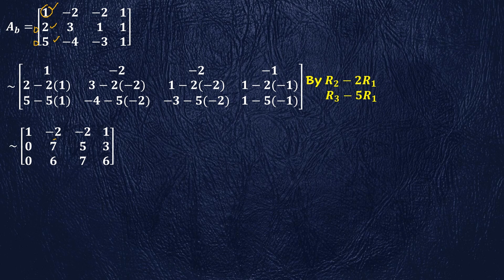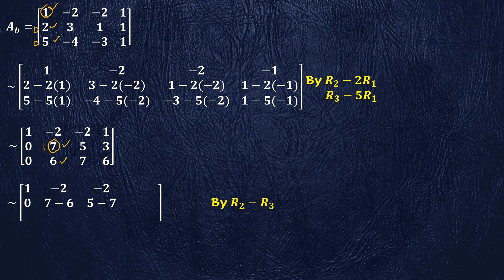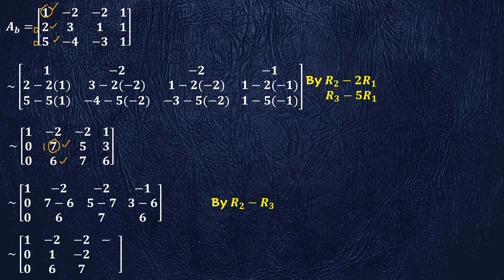Note that we need to transform the matrix of coefficients into the identity matrix of order 3. For this we need 1 in place of 7, which is the first non-zero element in the second row. To make this element 1, we subtract R3 from R2. After performing this operation we are left with the following transformed augmented matrix.